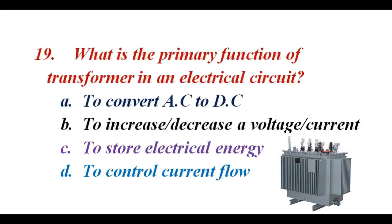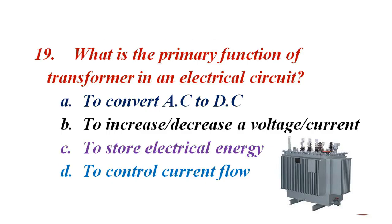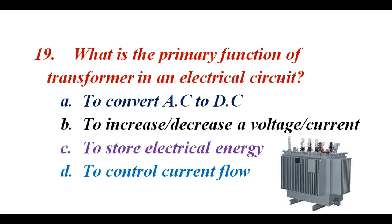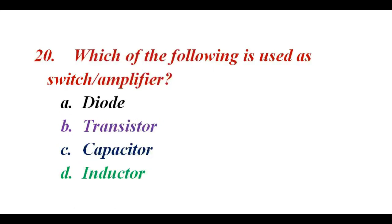What is the primary function of a transformer in electrical circuits? A. To convert AC to DC. B. To increase or decrease voltage or current. C. To store electrical energy. D. To control current flow. The correct answer is B. To increase or decrease voltage or current.